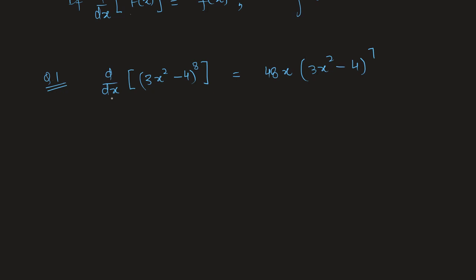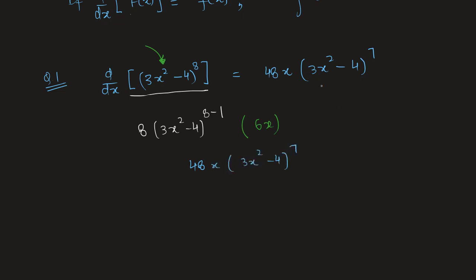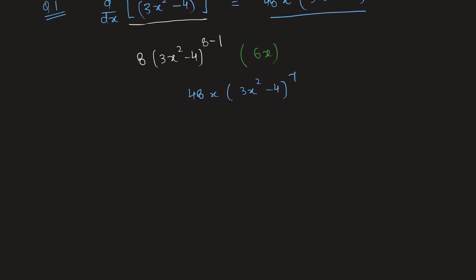We'll use the chain rule here. The first step is always to solve the outer bracket first. Applying the power rule: 8(3x² - 4)⁷, then differentiating the inside function gives 6x. Simplifying, we get 48x(3x² - 4)⁷, which is confirmed.